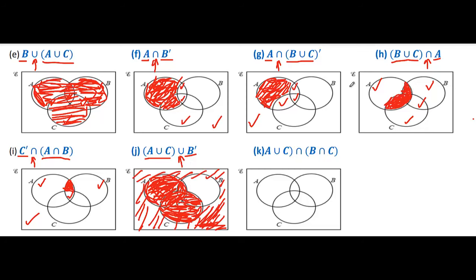Here first we have to identify A union B — take this bracket as a whole one element: A and B. Now identify C — this is C and C. As there is intersection between them, we shade the double tick region. So this is our final shaded region.